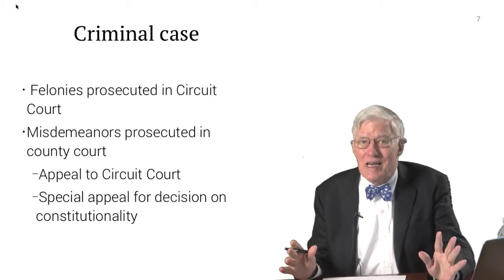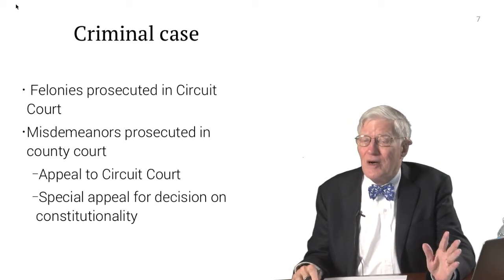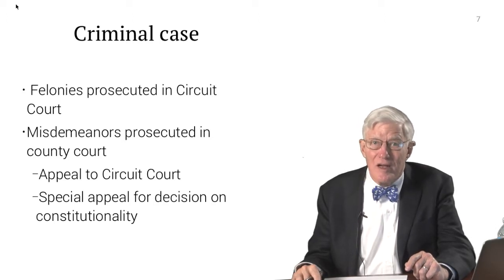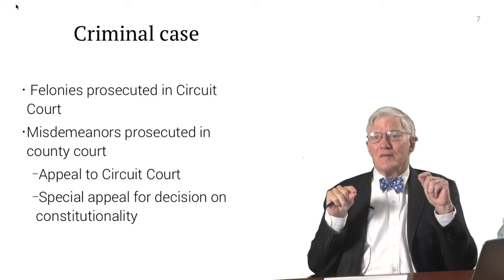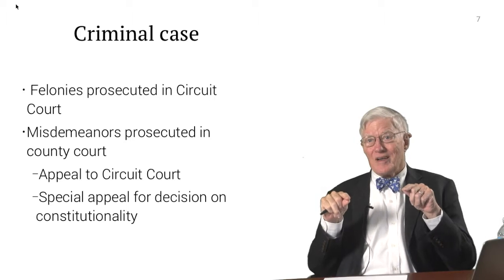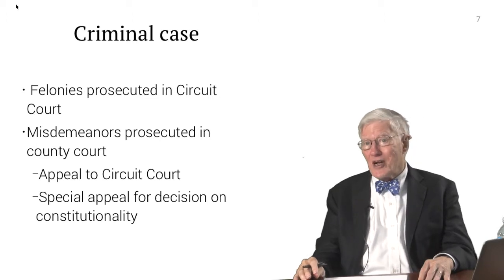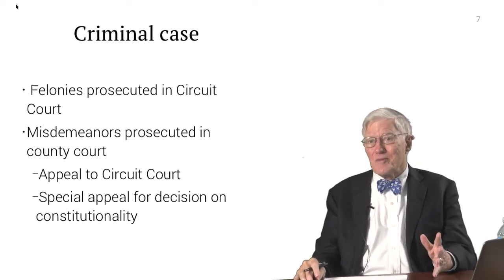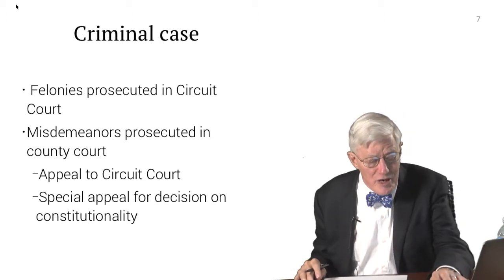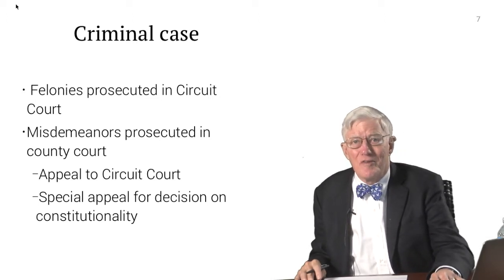In criminal cases, we're basically dealing with felonies prosecuted in the circuit court. Constitutional questions can also arise in misdemeanors prosecuted in the county court. The appeal from county court is normally to circuit court, but where a question involves constitutionality, there is a special provision that allows for review by the District Court of Appeal. We'll get into all of this in more detail when we reach Article 5 and the jurisdiction of courts.